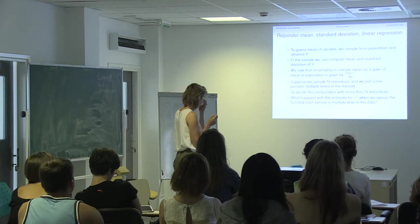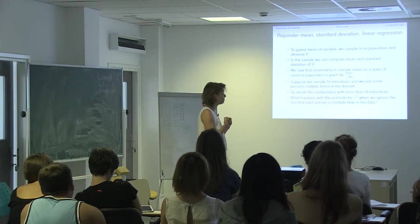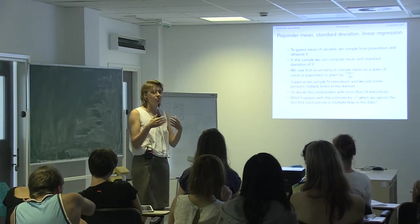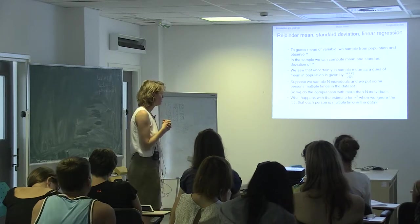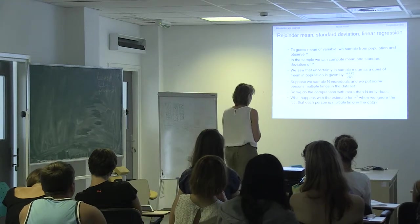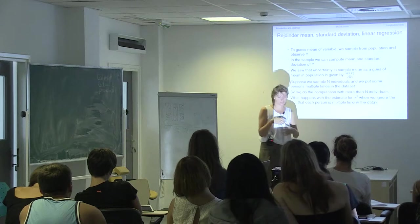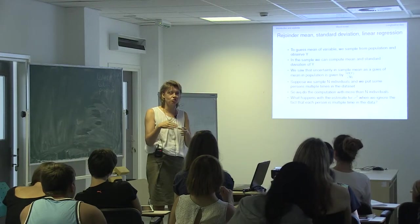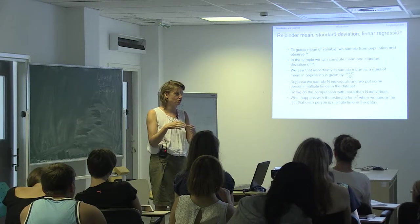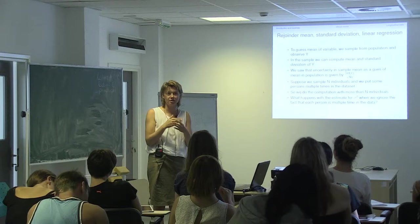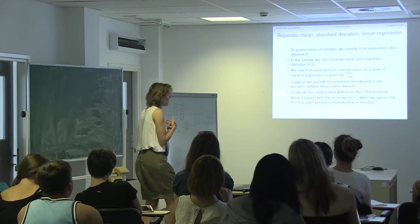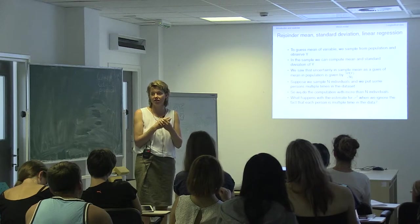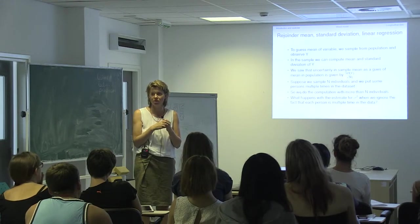But suppose we have not independent individuals, but we put some of our individuals multiple times in our dataset — so they are actually the same. If you then compute your sigma squared, what would happen? You have your dataset, you sample n persons, but you just added some records and copy-pasted some of your individuals. So you have actually correlated data. These records are the same, so they are highly correlated. What would happen with sigma squared if you estimate it based on this dataset, ignoring the fact that you have clustered data with some persons multiple times?